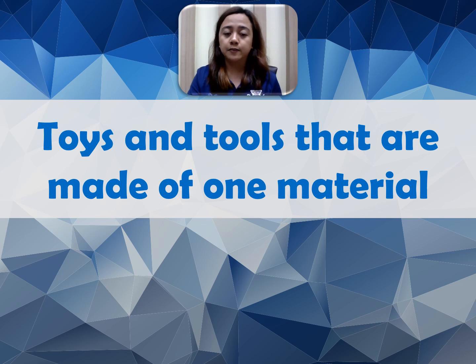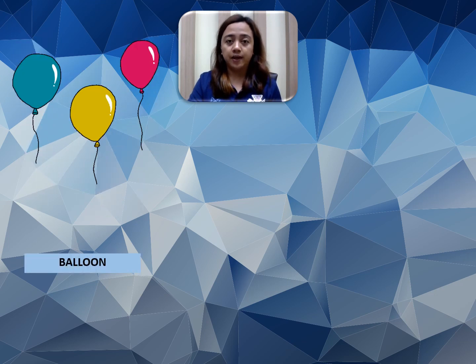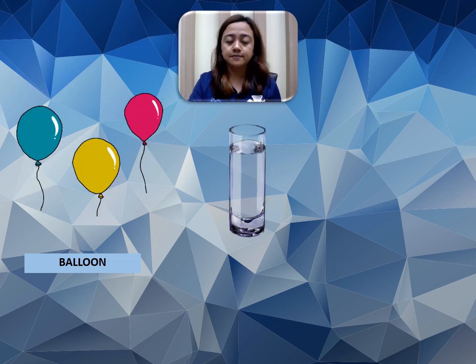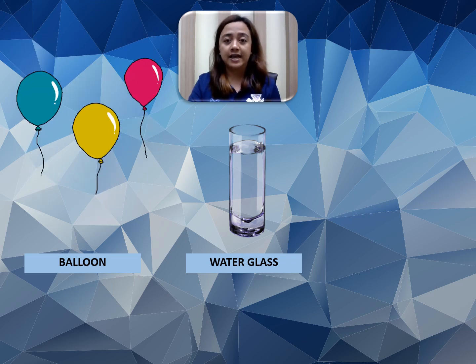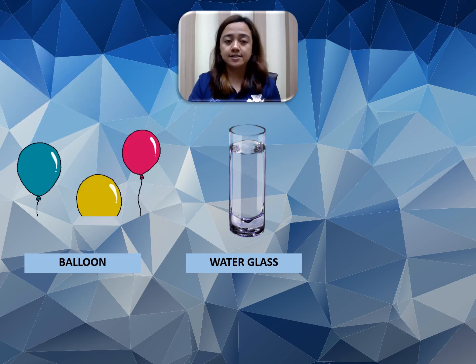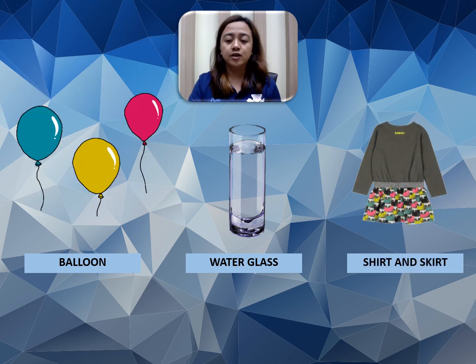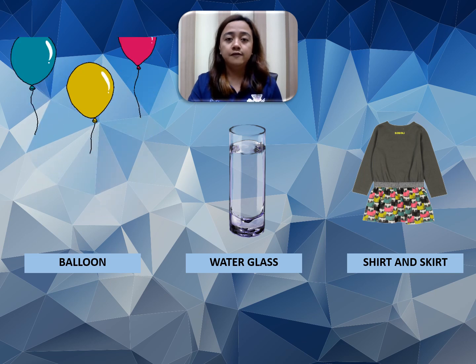In this lesson, I'm going to show you some examples of toys and tools that are made of only one material. First, we have the balloon — it is made of rubber, so only one material. Next is a water glass, which is made of glass, though some glasses are made of plastic. Next we have the shirt and skirt, which are made of fabric.